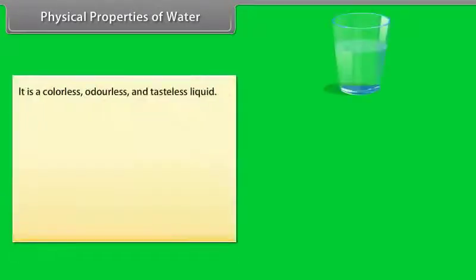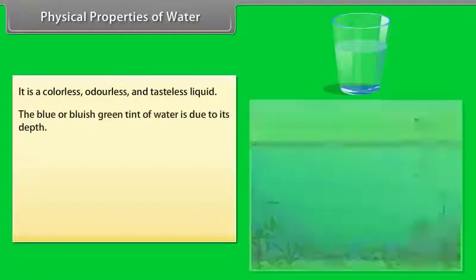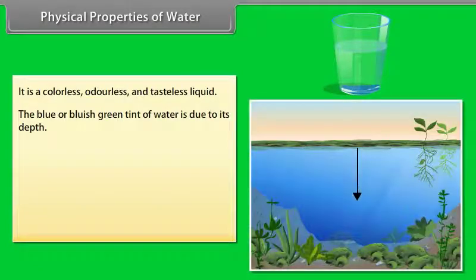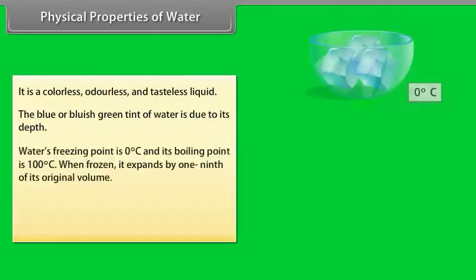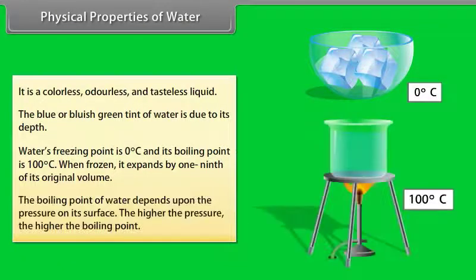Physical properties of water: It is colorless, odorless, and tasteless. The blue or bluish-green tint of water is due to its depth. Water's freezing point is 0 degrees Celsius and its boiling point is 100 degrees Celsius. When frozen, it expands by one-ninth of its original volume. The boiling point depends upon the pressure on its surface. The higher the pressure, the higher the boiling point.